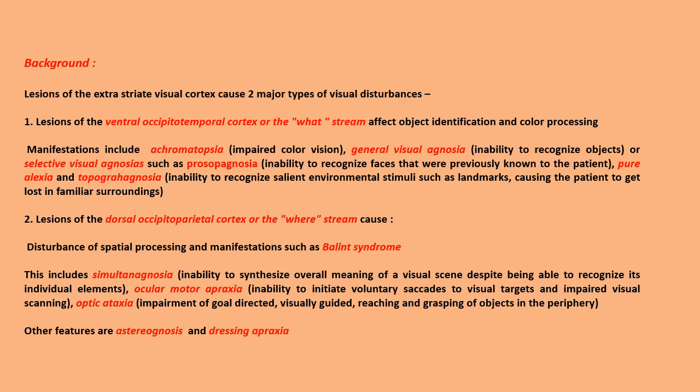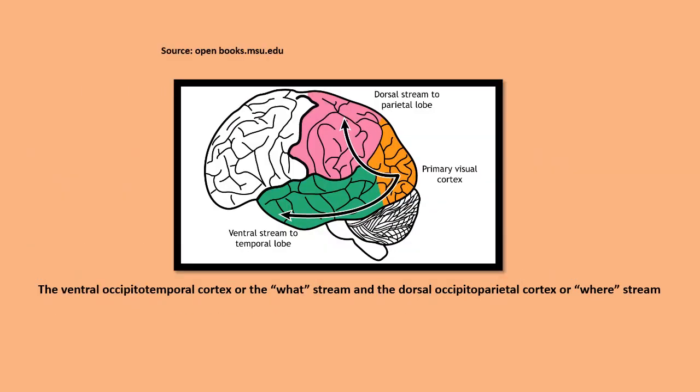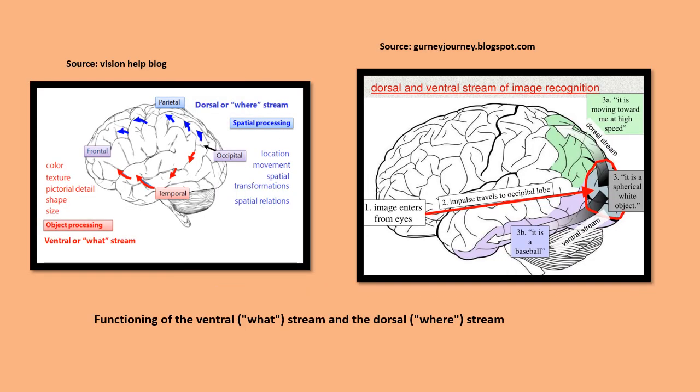Other features of dorsal stream lesions include astereognosis and dressing apraxia. This picture shows the ventral occipital temporal cortex, or the 'what' stream, and the dorsal occipital parietal cortex, or the 'where' stream. The ventral stream is concerned with object processing and identification, whereas the dorsal stream is concerned with spatial processing.